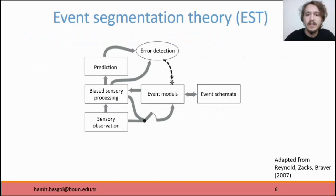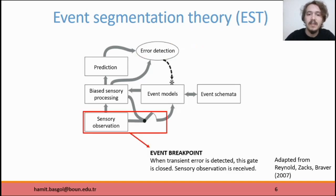Event segmentation theory explains how people segment. This is the information processing model of event segmentation theory. Event models are working memory representations. They bias our sensory processing and generate perception. With the help of them, we make perceptual predictions. Perceptual predictions might generate prediction errors that are monitored by the system. If the error shows a transient increase, an error-based gating mechanism is closed and an event breakpoint is detected.